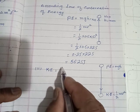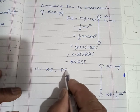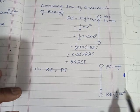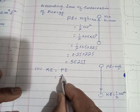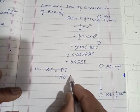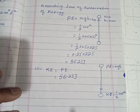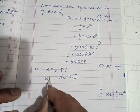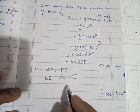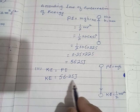So the KE when it hits the ground is equal to PE at maximum height, which we calculated as 56.25 joules. According to the law of conservation of energy, total energy remains constant, and when it hits back the energy will be the same.